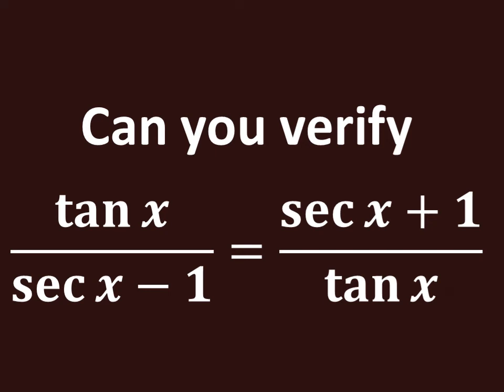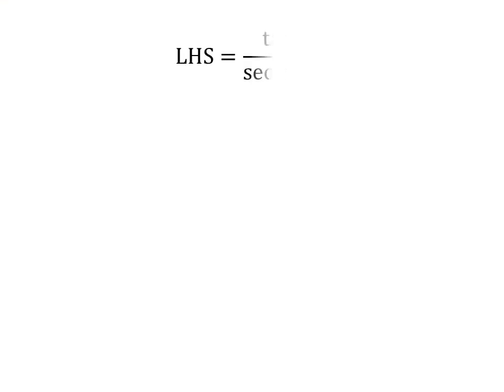In this video, we will learn to verify the given identity: tangent of x upon secant of x minus 1 is equal to secant of x plus 1 upon tangent of x. The left hand side of the identity is equal to tangent of x upon secant of x minus 1.